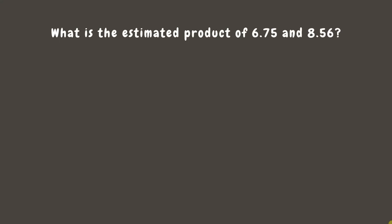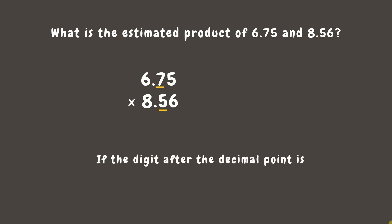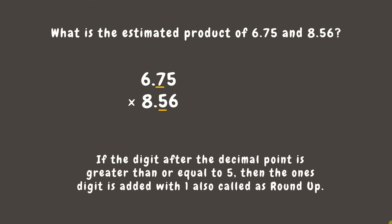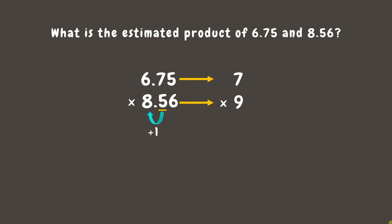Now that you already know how to estimate products of decimals, let's have more examples. What is the estimated product of 6.75 and 8.56? Remember, to estimate, round each decimal to the nearest whole number before multiplying. Here, we can see that the digits after the decimal points are 7 and 5, which are either greater than or equal to 5, so we will round up. Since 7 is greater than 5, let's add 1 to 6, and that's 7. For 8.56, since the digit after the decimal point is 5, let's add 1 to 8, and that is 9.